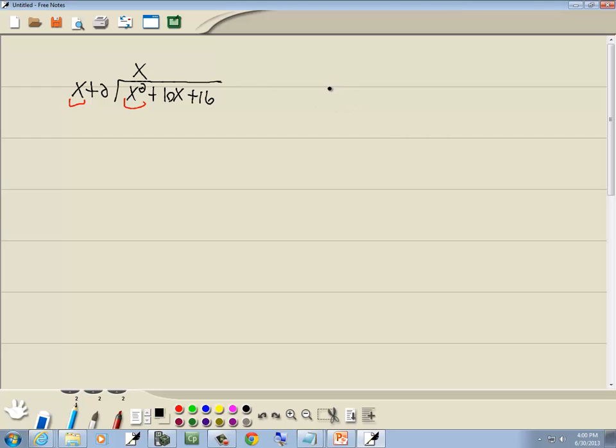Now whatever you put up on top you multiply by what's on front, so we're going to take the x and multiply times x plus 2. Well, x times x is x squared, x times 2 is 2x, and then we're going to subtract that line.